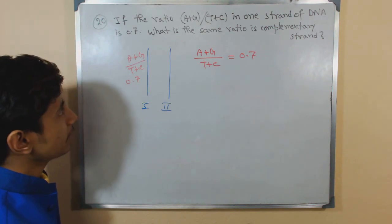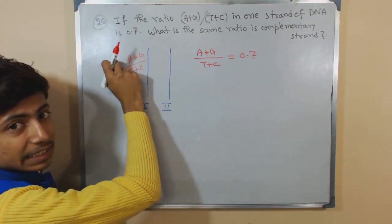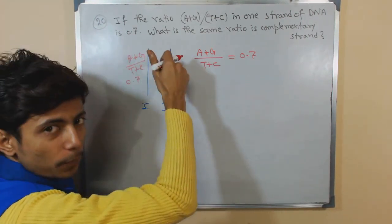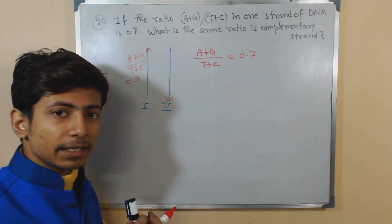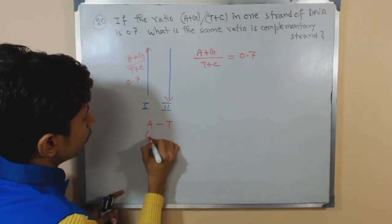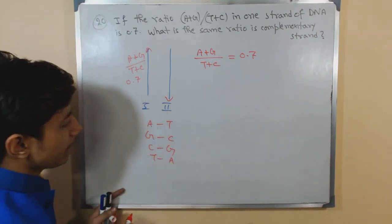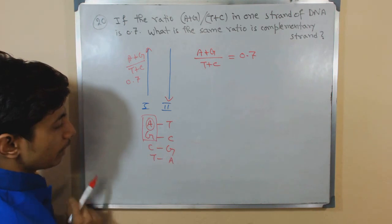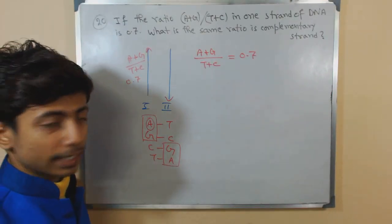If there is adenine, the number of adenine plus guanine present in this strand will be completely opposite in the other strand, because the strands are anti-parallel and complementary. If adenine is there, there will be thymine; if guanine is there, there will be cytosine. So whatever ratio we get here will have implications for the other strand.